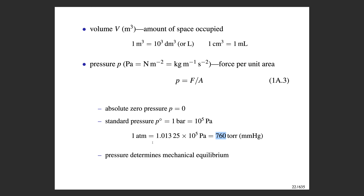The circle symbol refers to standard pressure. Whenever you see thermodynamic quantities with a little circle above them, that refers to standard conditions — a pressure of one bar.